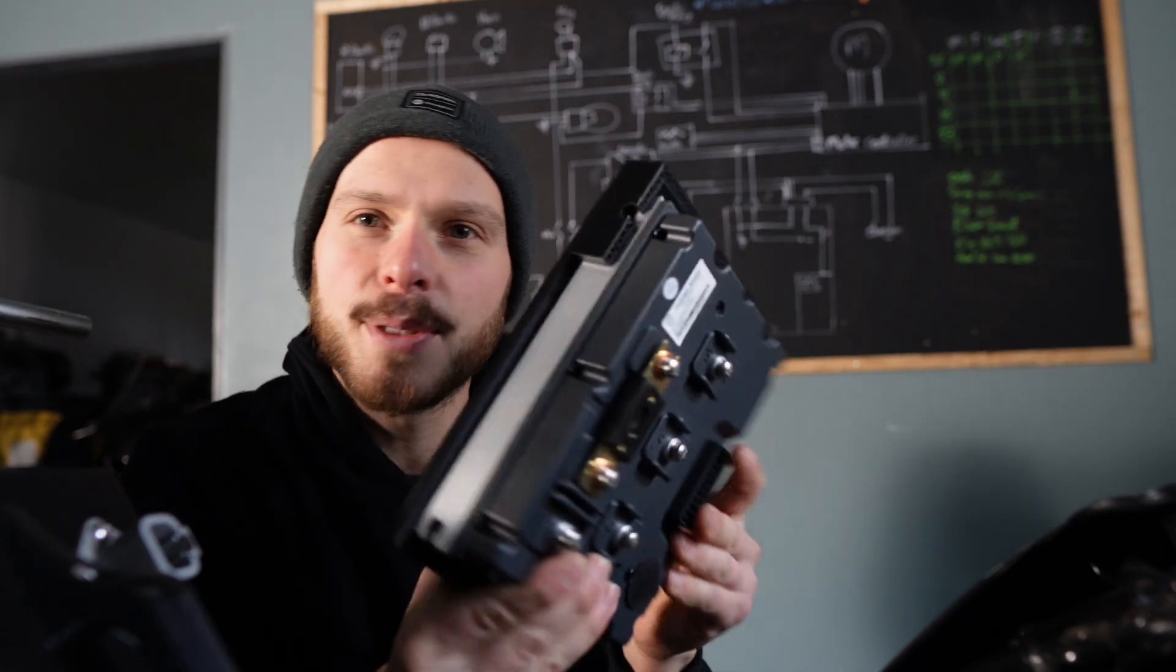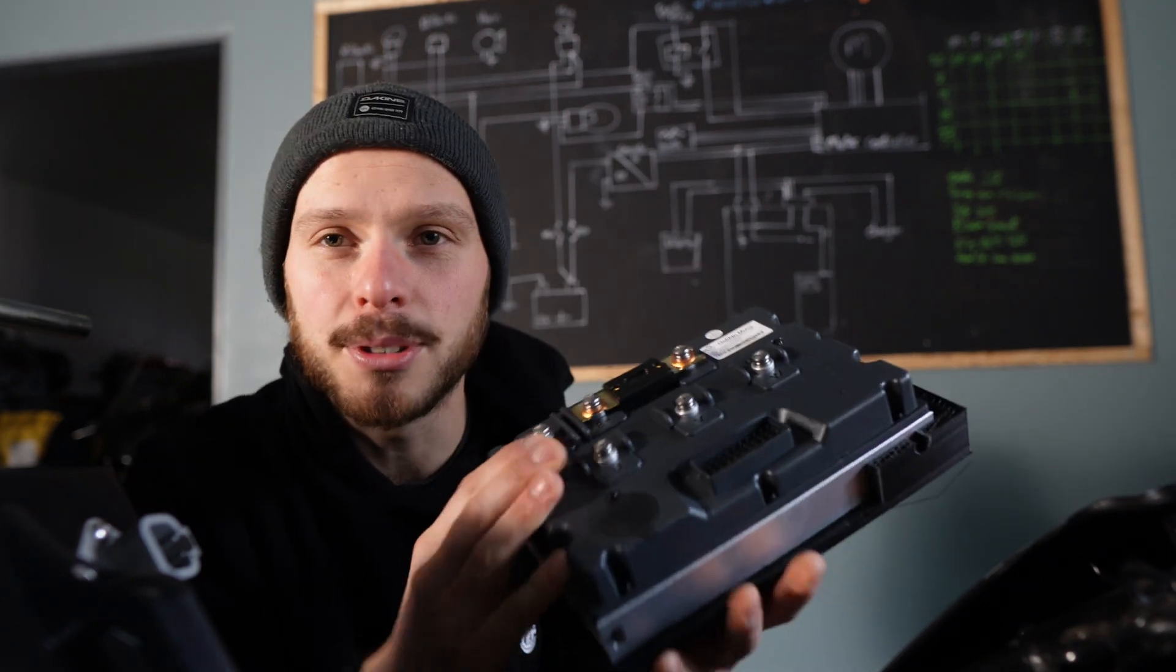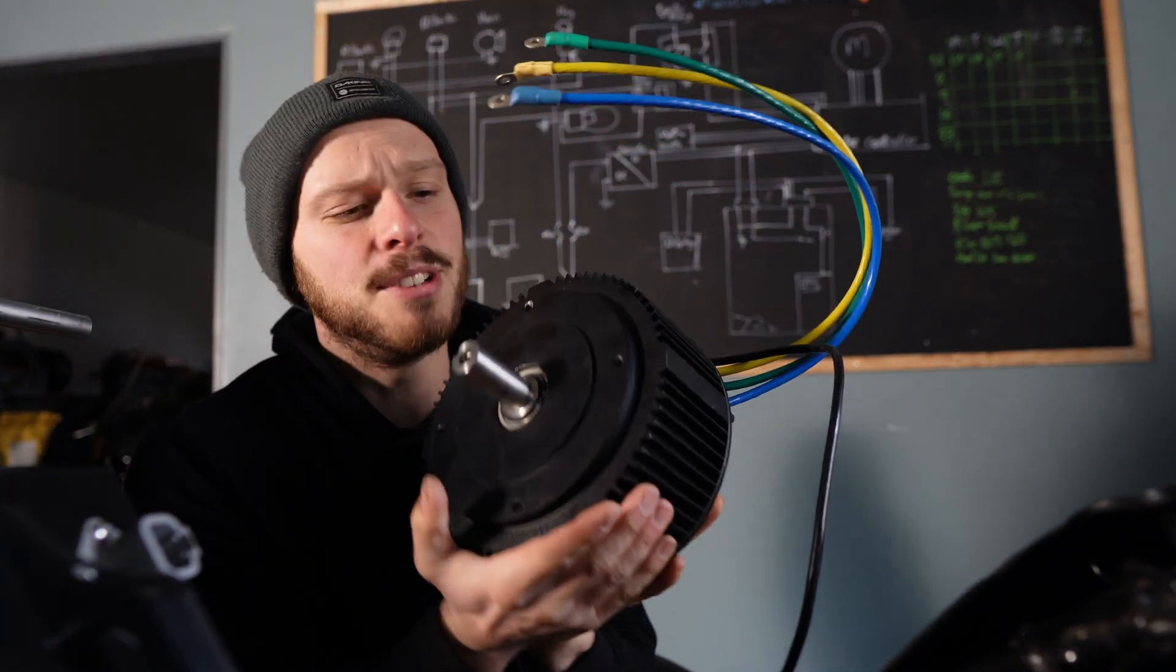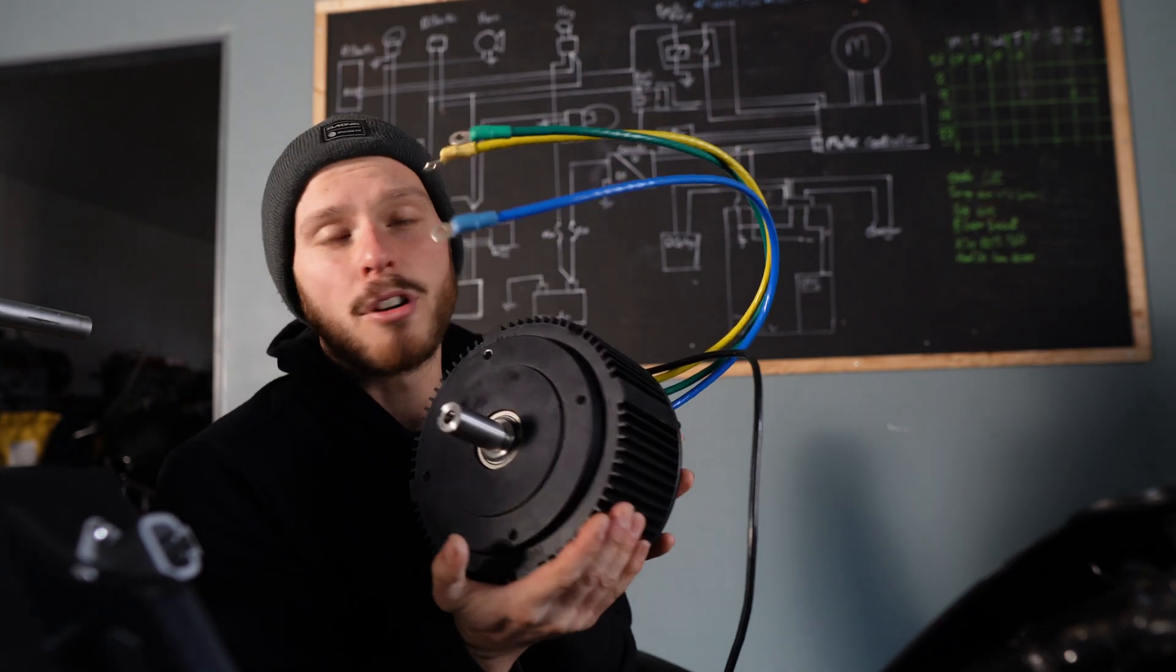Now we can move on to the motor controller and the motor itself. This here is actually my motor controller and my motor. It's a five kilowatt continuous brushless DC motor from Golden Motors.